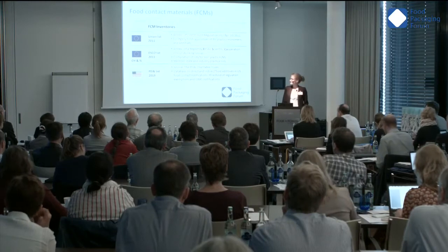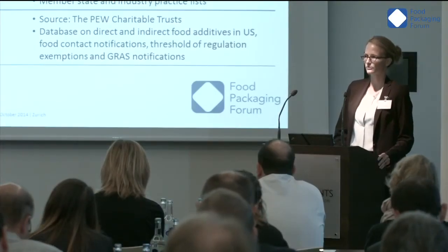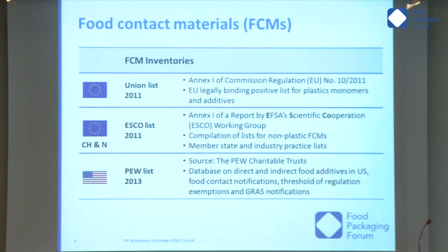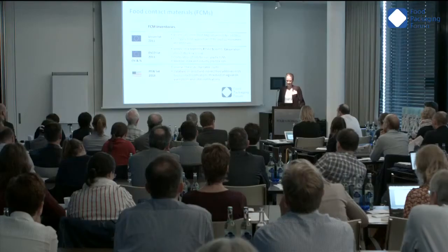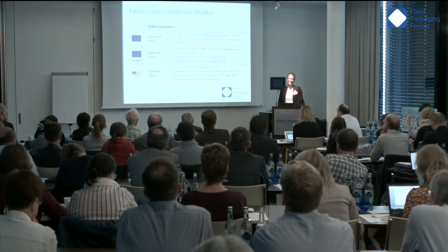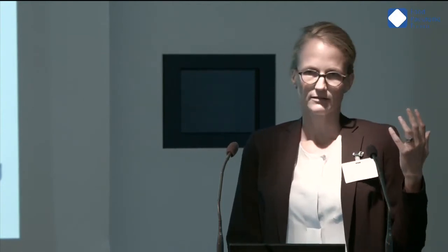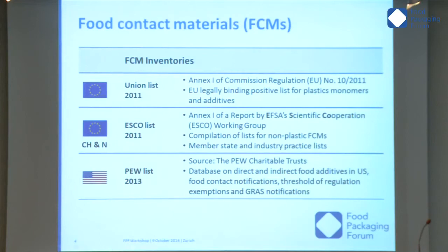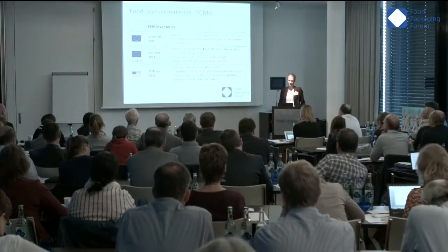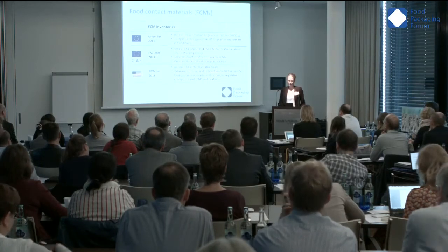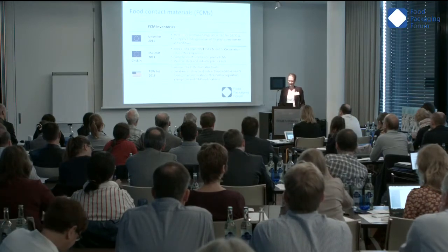The food contact materials we analyzed were on three different lists — two European lists and one American list, the Pew list. The first is the Union list, which is the EU legally binding positive list for plastic monomers — it's Annex 1 of the plastics regulation number 10/2011. It contains monomers and additives used for the production of plastics. The second list is more comprehensive: the ESCO list, also Annex 1 of a report published by the EFSA scientific cooperation working group in 2011. It contains chemicals used for the production of non-plastic food contact materials like paper and board, silicones, rubbers, and printing inks.